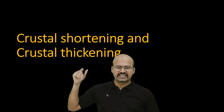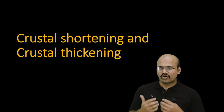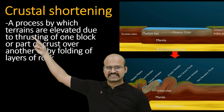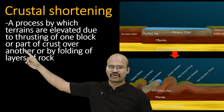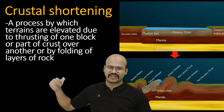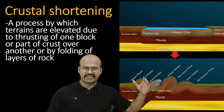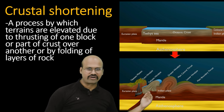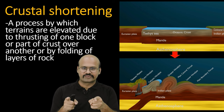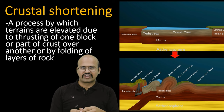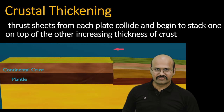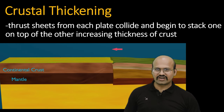Two important terms when studying Himalayas are crustal shortening and crustal thickening. Crustal shortening is a process by which terrains are elevated due to thrusting of one block of crust over another, or by folding of layers of rocks. Basically, when compressive forces act in a region the plates are uplifted and the length of the plate is shortened — the length of the crust is reduced because of this uplifting, hence the name crustal shortening. Crustal thickening is when thrust sheets stacked upon each other increase the thickness of the crust.